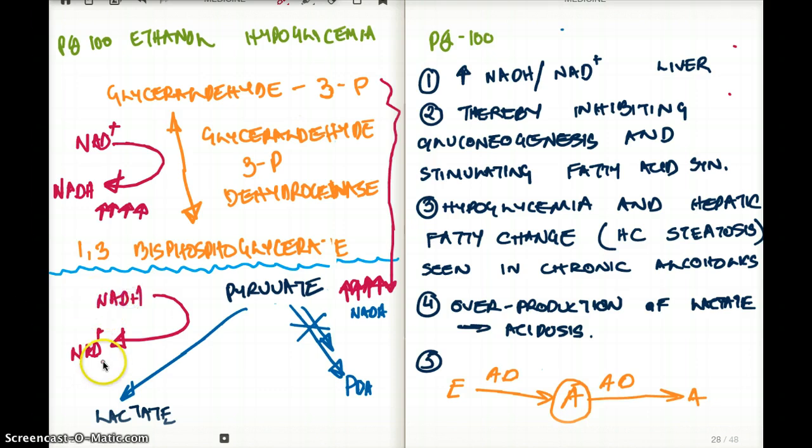So NADH to NAD is generated by making lactate. Now this step, pyruvate to lactate is favored. This is one of the steps that's favored. The other step that's favored is that from pyruvate in the TCA cycle.